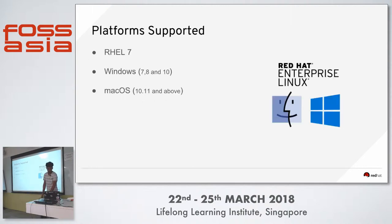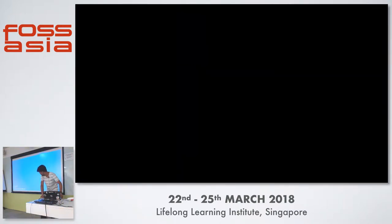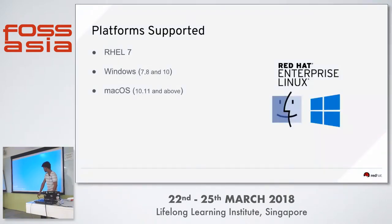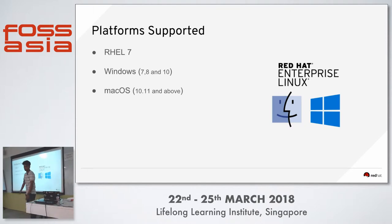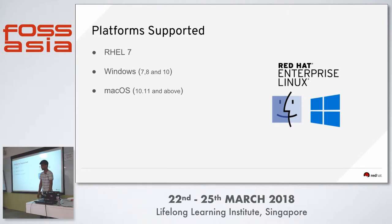The platforms supported are RHEL 7, Windows 7, 8, and 10, and macOS 10.11 and above. Not all Linux distros are available — we are officially supporting RHEL 7. However, you can try it on Fedora as well, and Minishift can be manually tried. It will also install on CentOS.